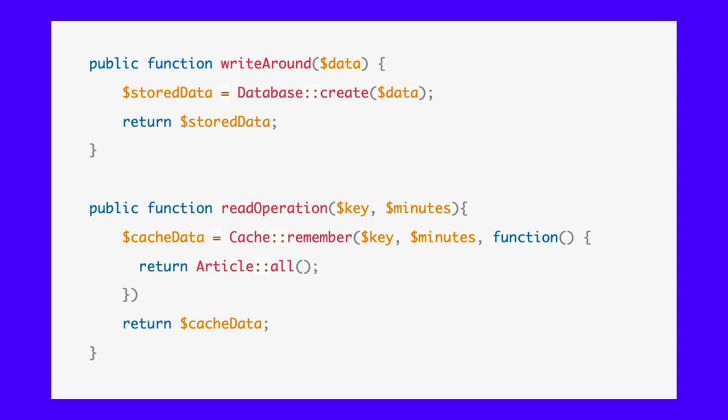The write-back method calls the write-through method, which stores the data to the cache server and a temporary array to be pushed later to the database server using the update database server method. You can set up a cron job to update the database server every five minutes. This strategy allows all write operations to go directly to the database server without updating the cache server. Only during the read operations is the cache server updated. Assuming a user wants to create a new article, the article stores directly to the database server. When the user wants to read the article's content for the first time, it is retrieved from the database server and updates the cache server for subsequent requests. You can implement this strategy with the following code.